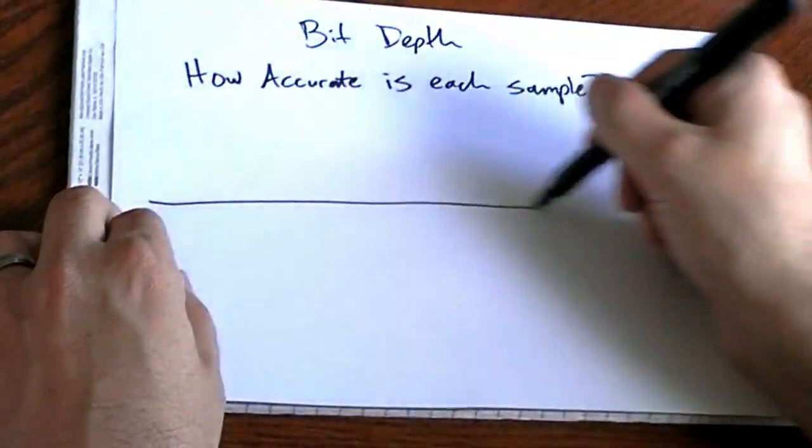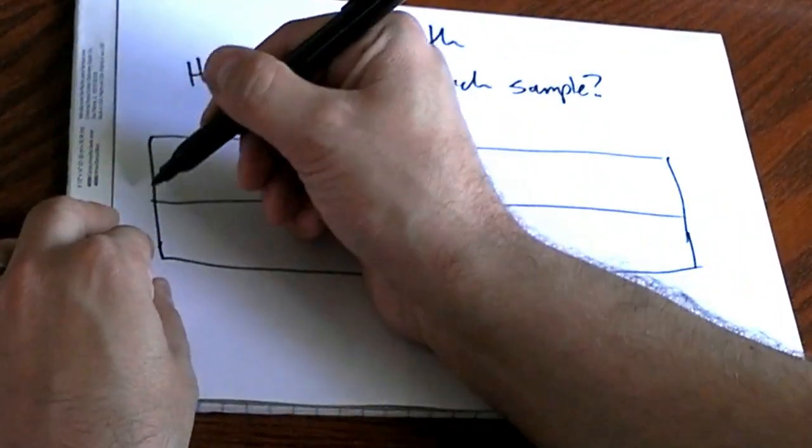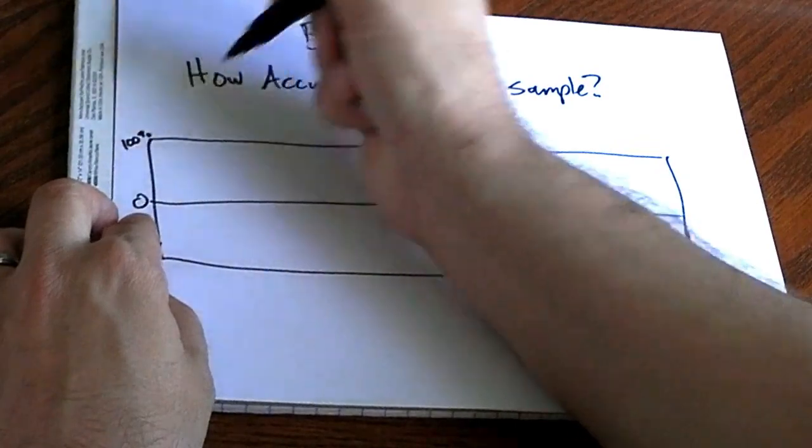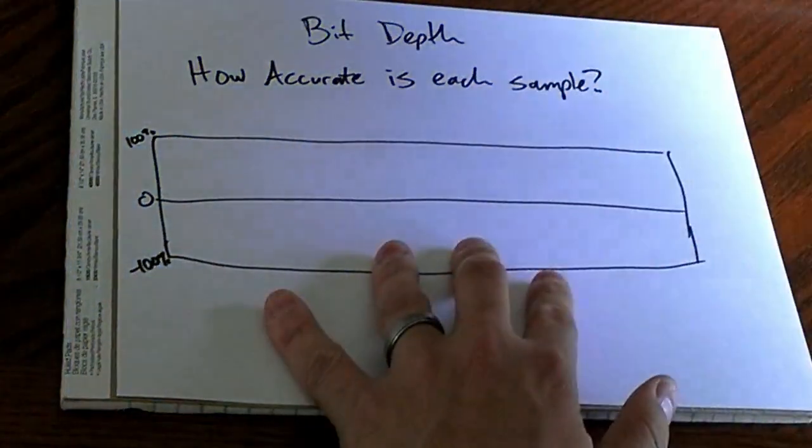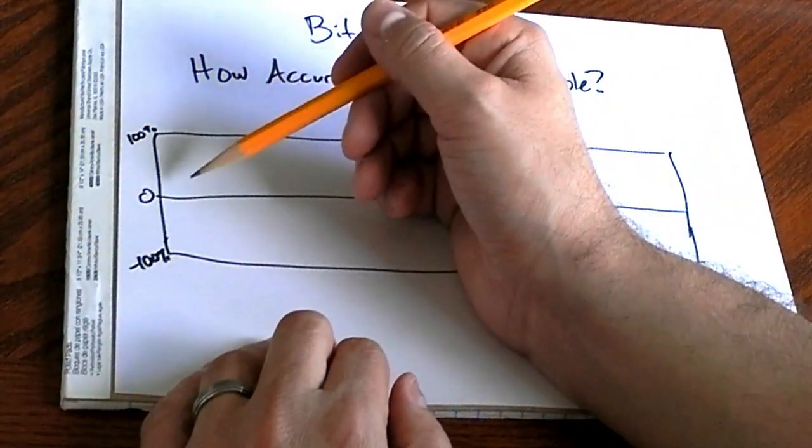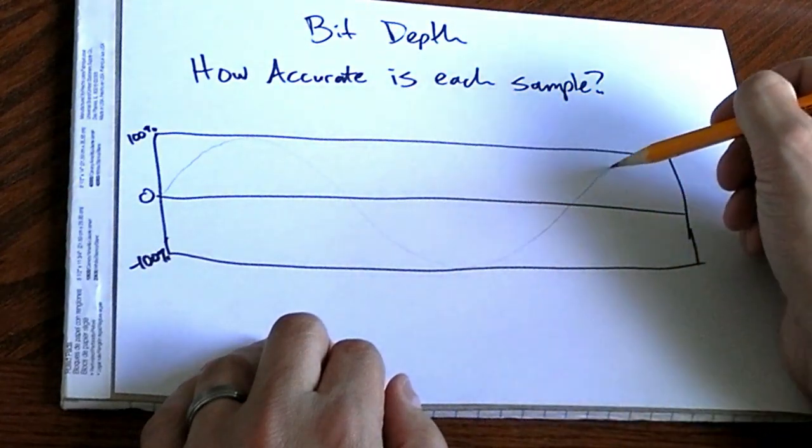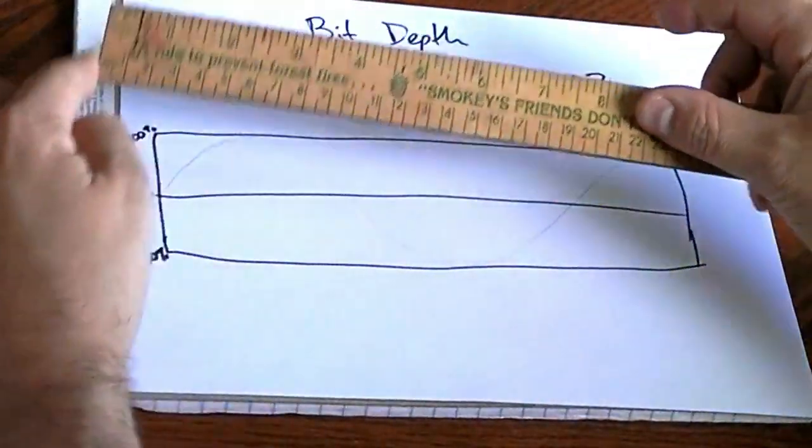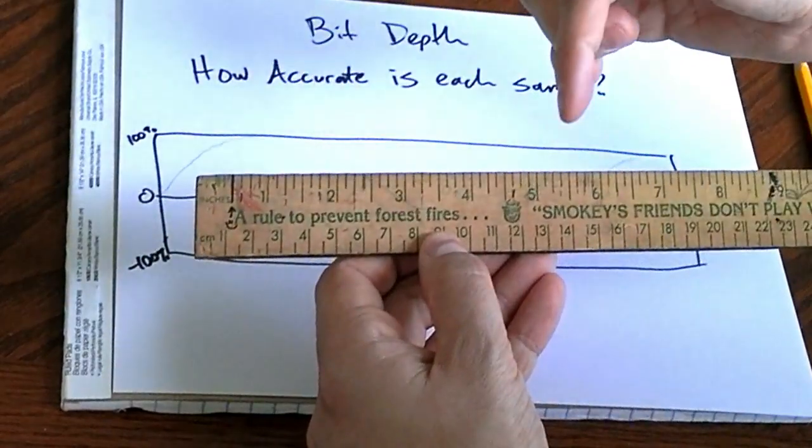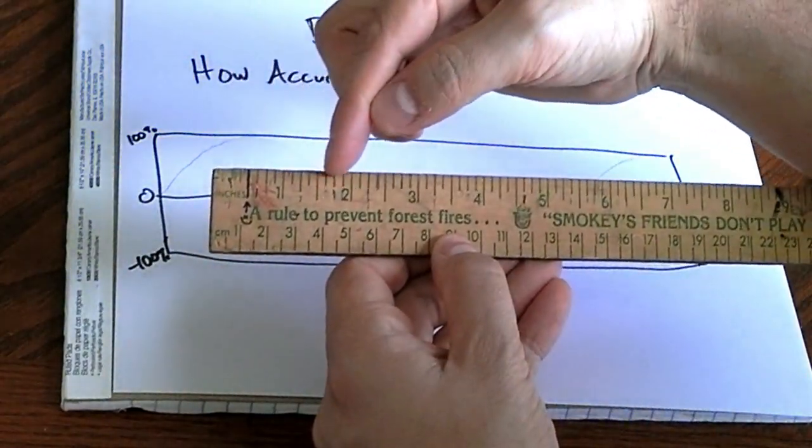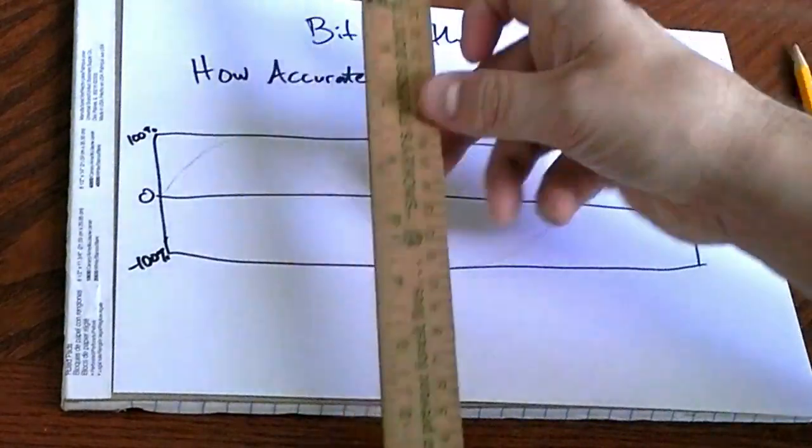Now what bit depth means is how accurate is each sample or snapshot. And you can imagine, here's your waveform, right? This is zero, this is 100%, this is negative 100%. So on this scale, a zero decibel full-scale wave goes all the way up to 100% and all the way down to negative 100%, and all the way up again, and so on. Bit depth is like a ruler. A low bit depth means you can only measure every inch or every centimeter. A higher bit depth gives you more fractional pieces to divide the ruler into.